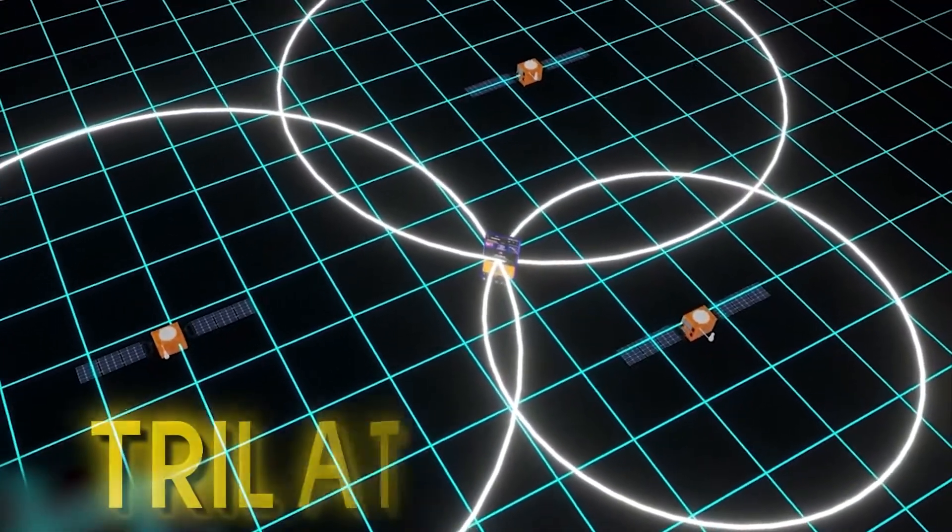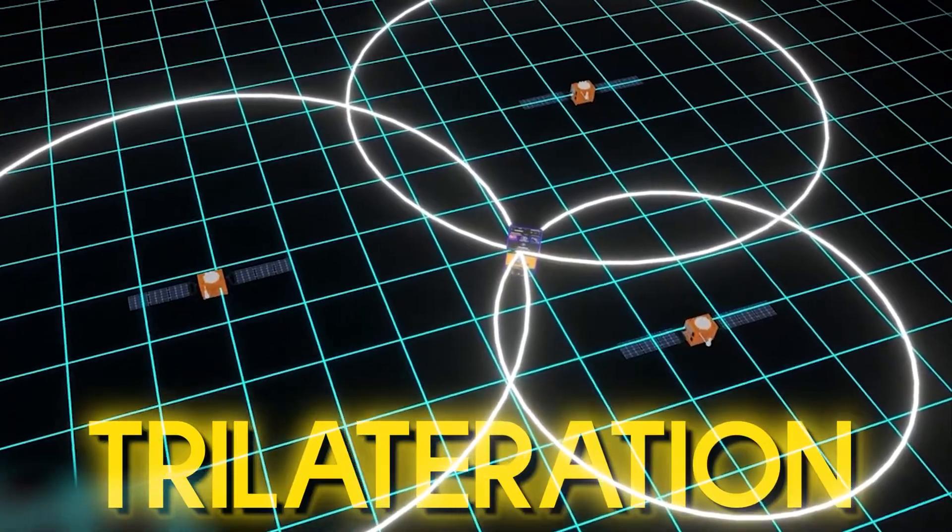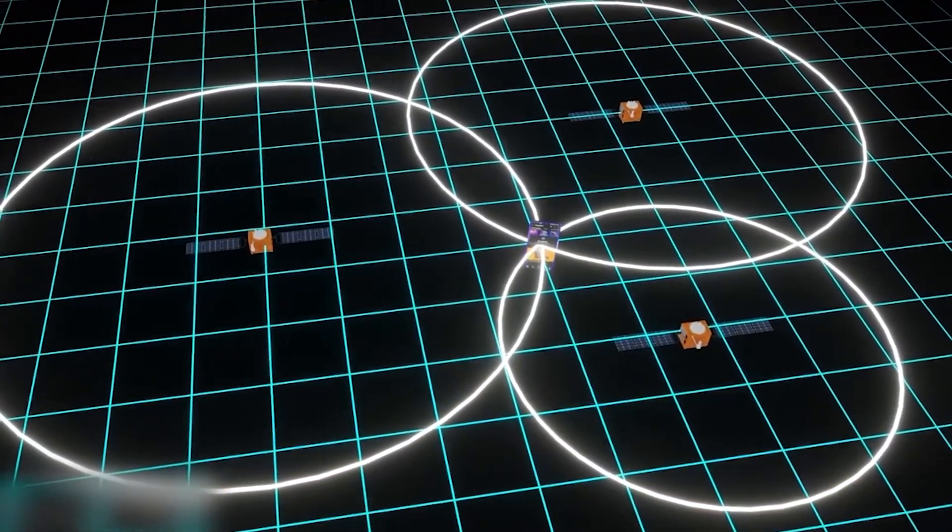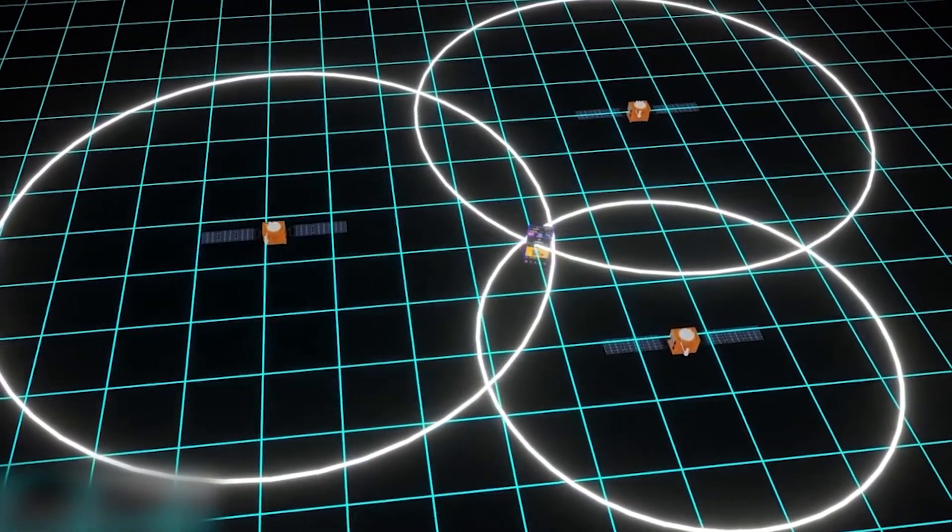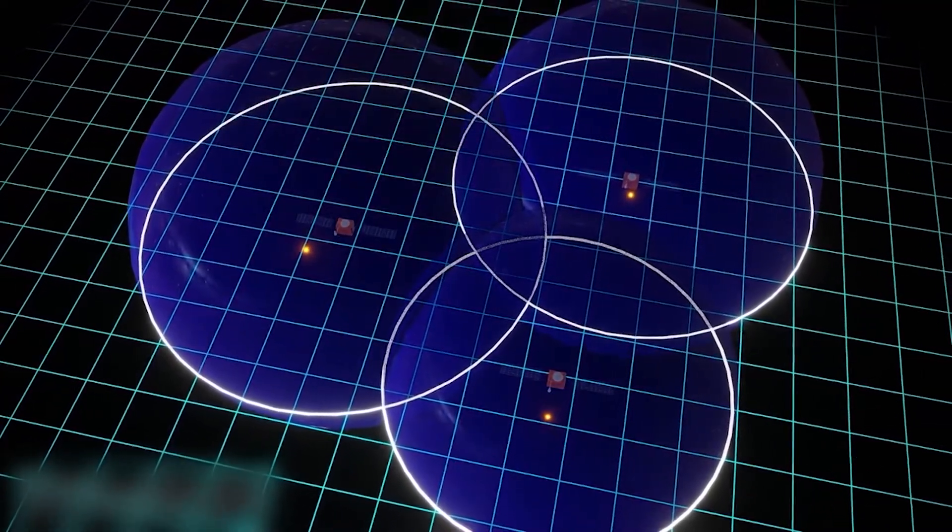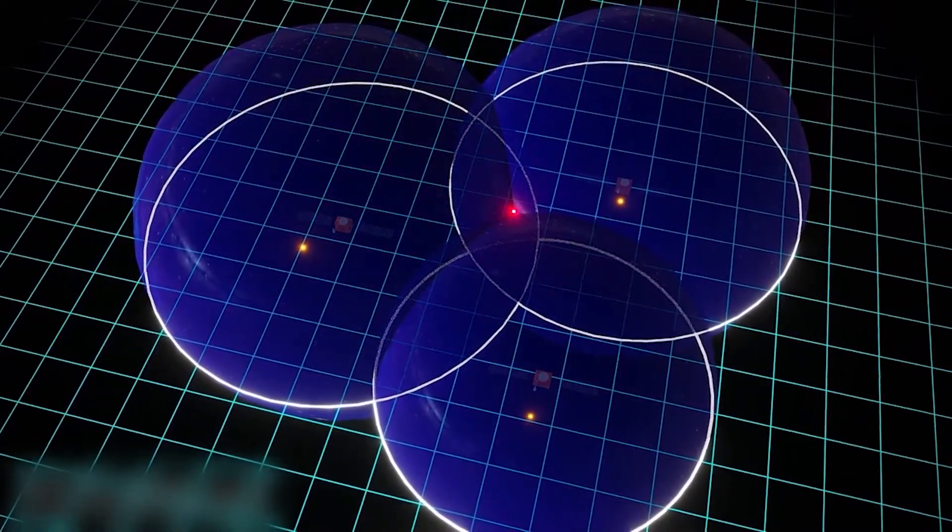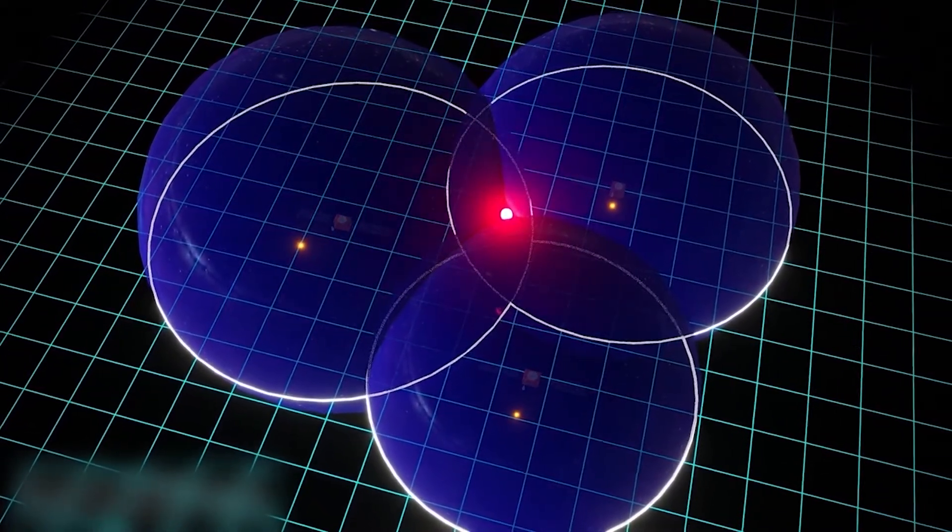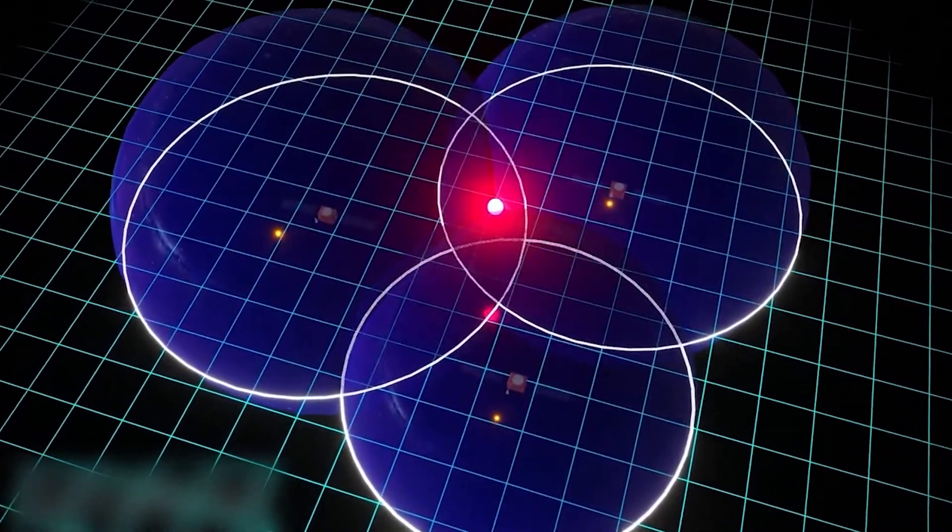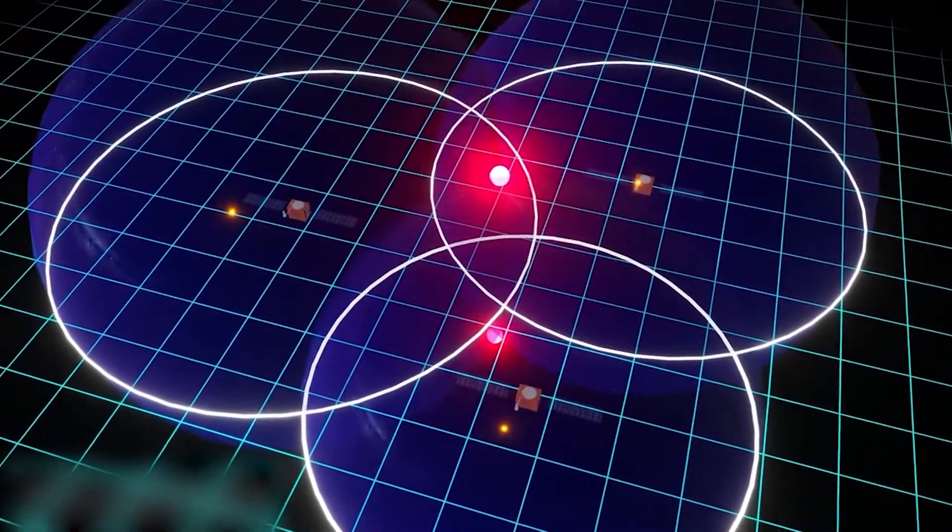This calculation is done using trilateration. Trilateration finds a place by measuring its distance from three or more known spots. Think of three circles, each with a center at these known spots. The circles are as big as the distance to the unknown place. The unknown place, or the position of the GPS user, is precisely where the three circles meet.